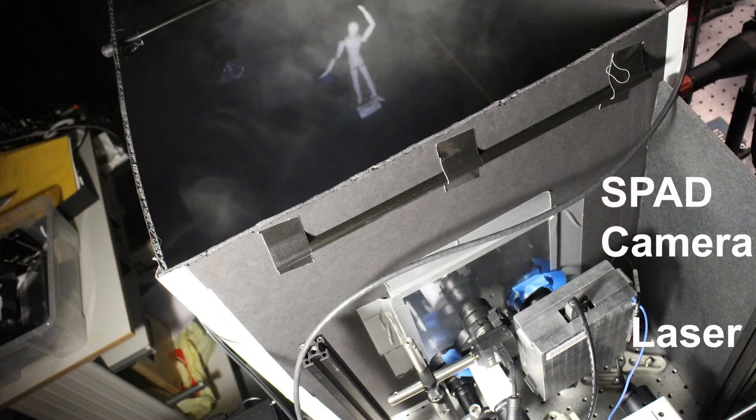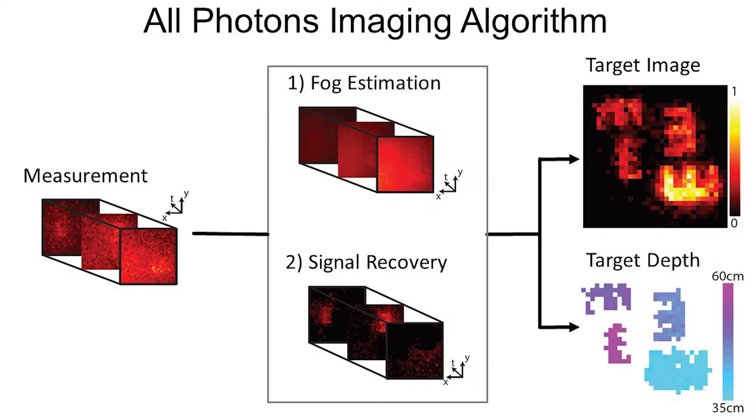All-photons imaging is based on a combination of sensing hardware and an algorithm that is able to extract useful information from the scattered photons and recover both the target photo and depth. This is unlike other approaches that reject the scattered light and produce low-quality results.